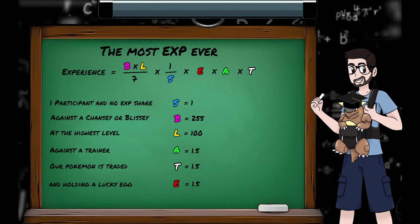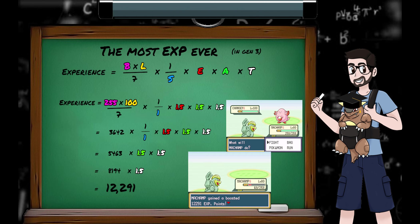Knowing all of this, we can say that the most experience you could possibly get in Generation 3 would be a one-on-one fight, with no experienced shareholders in the party, against a Pokemon with the highest base experience yield, at level 100, and its a trainer battle. And you're using a traded Pokemon holding a lucky egg, giving us the maximum experience in one go of 12,291.